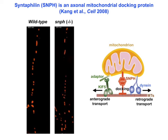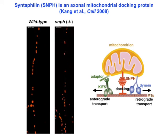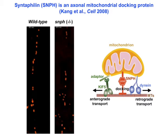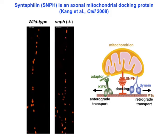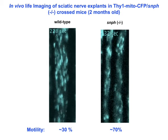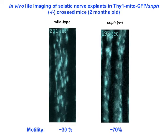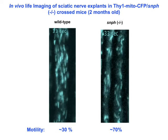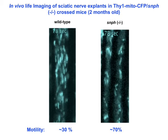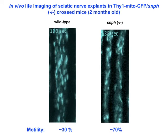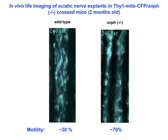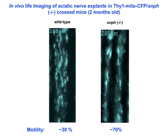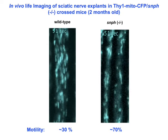Deletion of the syntaphilin gene recruits the majority of axon mitochondria into the motile pool, while over-expressing syntaphilin immobilized almost all mitochondria within axons. This was confirmed in an in vivo system. Deleting syntaphilin robustly increased axon mitochondria transport. The syntaphilin mice provide a unique genetic tool to address whether changes in axon mitochondria motility could affect the variability of synaptic transmission.